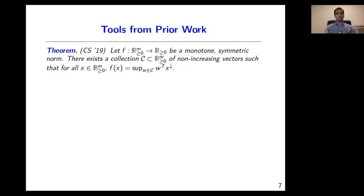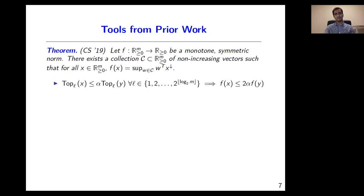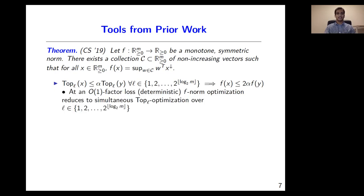The following result due to Chakrabarti and Swamy will be useful to us. They show that for any monotone symmetric norm f, there is a collection C of non-increasing vectors such that for any vector x, the f-norm of x is simply the supremum of the dot product of a vector in C with the sorted x-vector. It follows that if the top-L norm of a vector x is at most alpha times the top-L norm of a vector y for all L's, then the f-norm of x is bounded by alpha times the f-norm of y. With an additional logarithmic factor loss, you only need to work with L's that are powers of 2. The takeaway is that at an order-1 loss in approximation, deterministic f-norm optimization reduces to simultaneous top-L optimization over L's that are powers of 2.